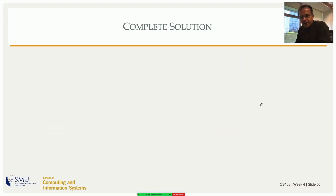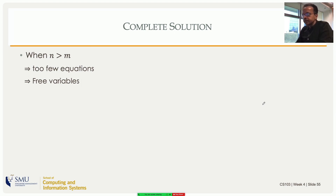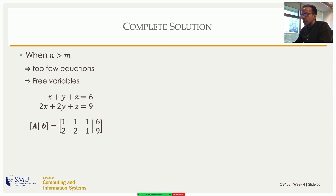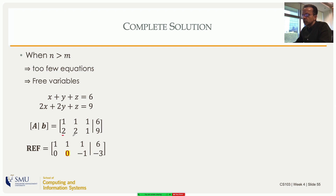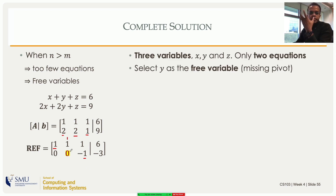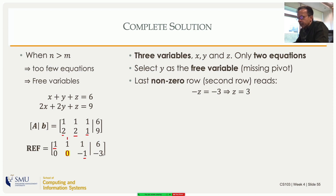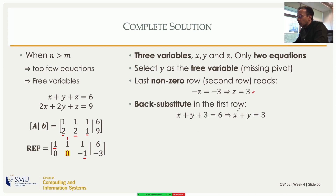Sometimes we get infinitely many solutions — this happens when the number of variables exceeds the number of equations. With three variables x, y, z and two equations, the augmented matrix is formed. Subtracting twice the first row from the second gives the REF with two pivots and three unknowns. No inconsistency — no zero equal to nonzero — so infinitely many solutions. The column with no pivot gives a free variable. The last row reads −z = −3, so z = 3.